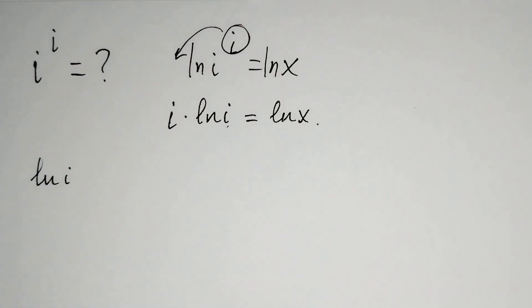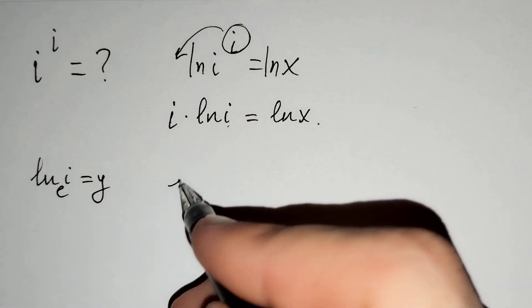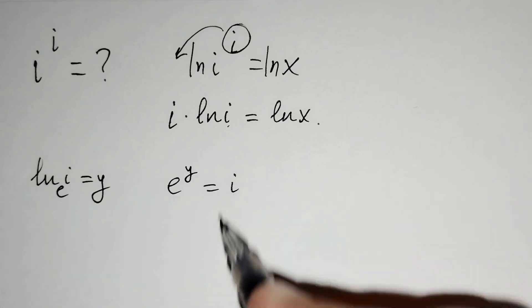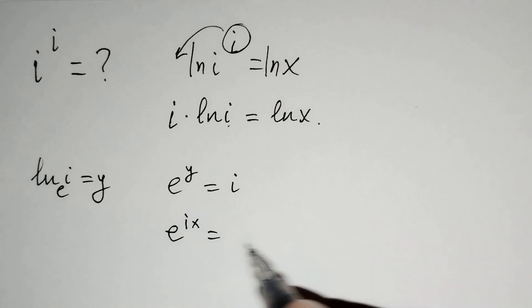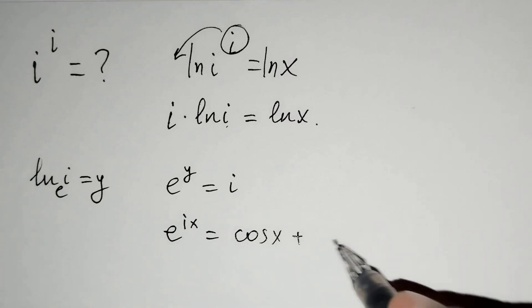Now we think that ln i equals y, so e power y equals i. We know from complex numbers that e power ix equals cosine x plus i sine x.